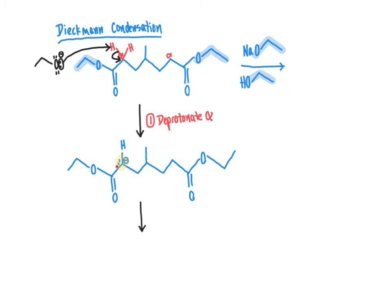So once we have deprotonated the alpha position to create our enolate intermediate, that would be resonance stabilized, we now have this carbon nucleophile all set up and ready to go. And so what will happen in this intramolecular reaction is that the lone pair electrons are going to come over and they're going to attack the other ester carbonyl group within this structure. So in order for that to happen, the pi electrons have to go out onto the oxygen so we never exceed the octet rule.